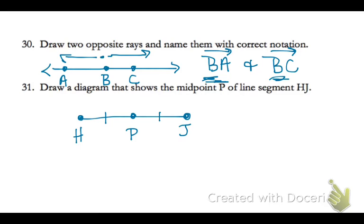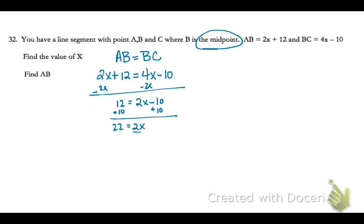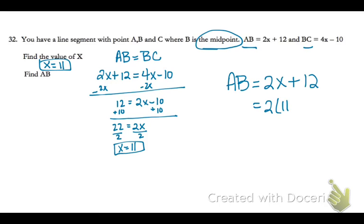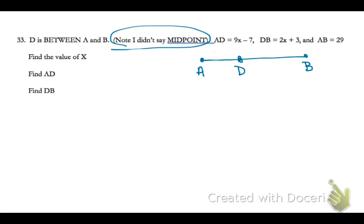Your diagram that shows the midpoint has the congruence marks on 31. On this one, it tells you specifically that B is the midpoint, so that means AB must equal BC. So if you substitute in and solve for X, you get X equals 11. Then it asks you to find AB, so you substitute 11 back into AB, and you get that AB is equal to 34.